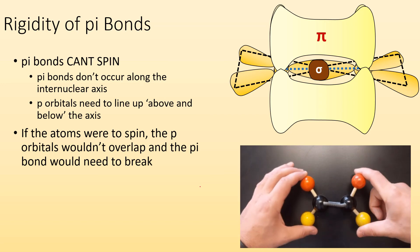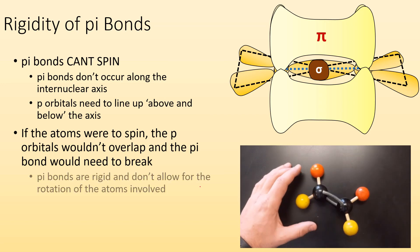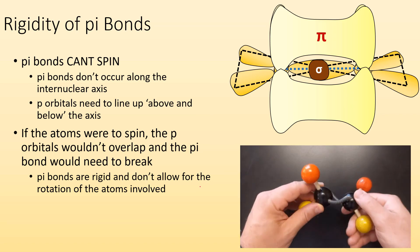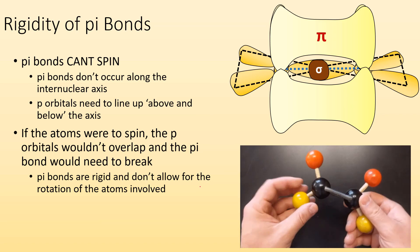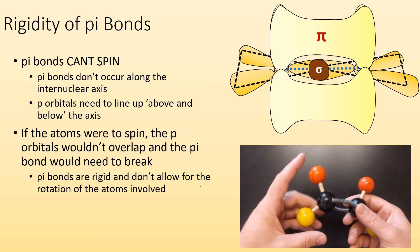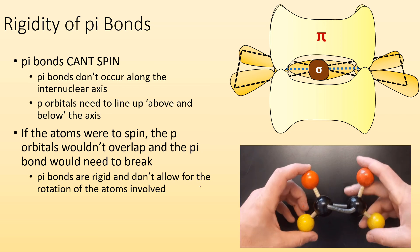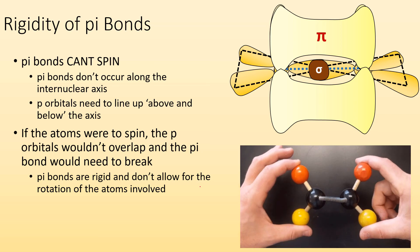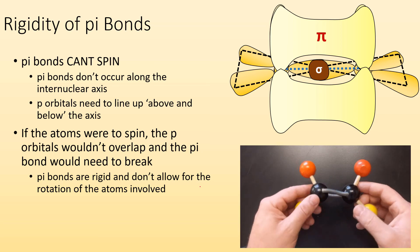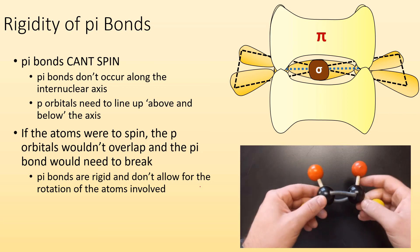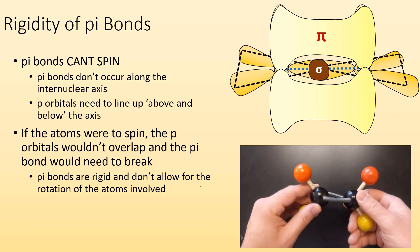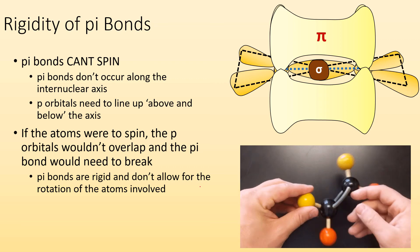In order to spin, we'd have to break that overlap. Pi bonds are rigid and don't allow for rotation of atoms involved in that pi bond. The rest of the molecule where there are sigma bonds can spin, but between those two carbon atoms that are pi bonded to each other, they can't spin.